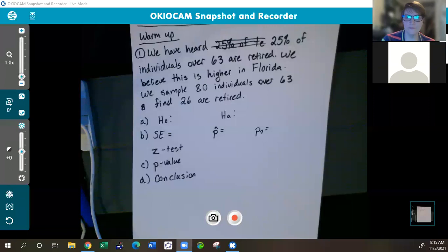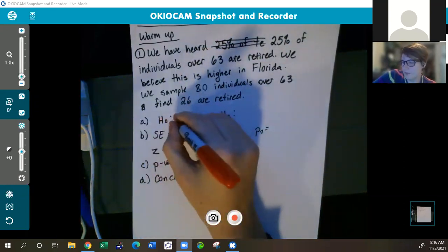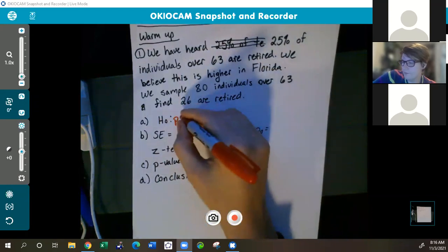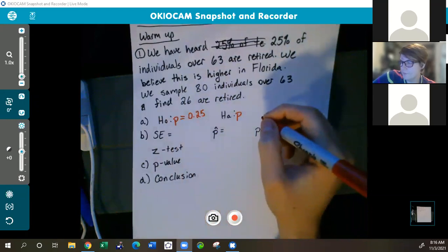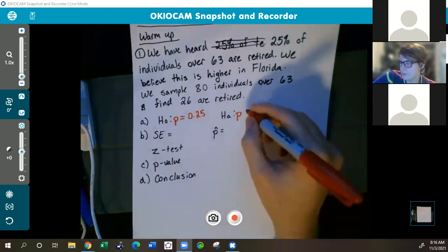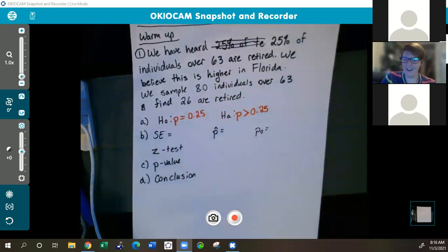I overheard the answers that some of you guys got and it sounded amazing. So let's look at this together. Would anybody like to volunteer to answer the first question? What is our null hypothesis? We got 0.25. And then for the HA one, we got p is greater than 0.25. Perfect. Nice job, guys.